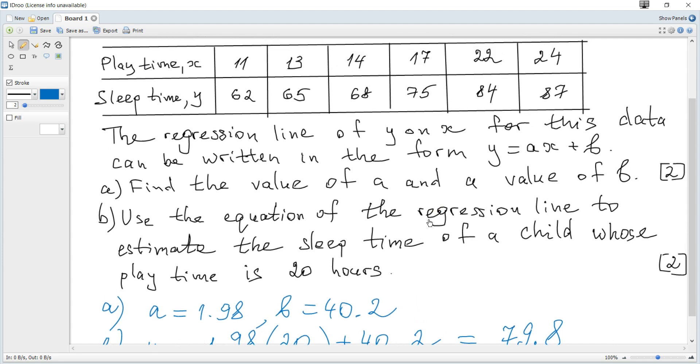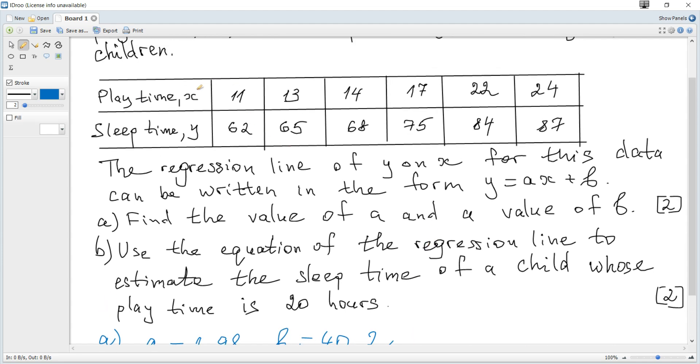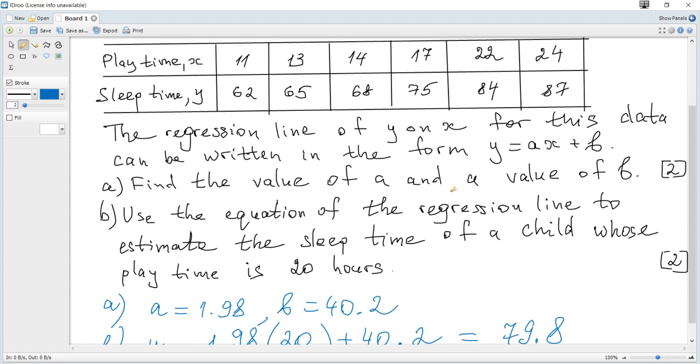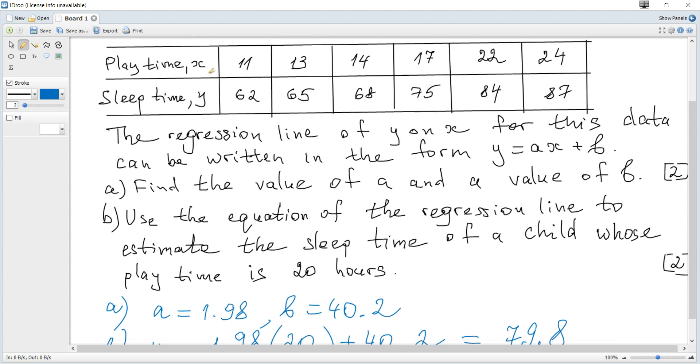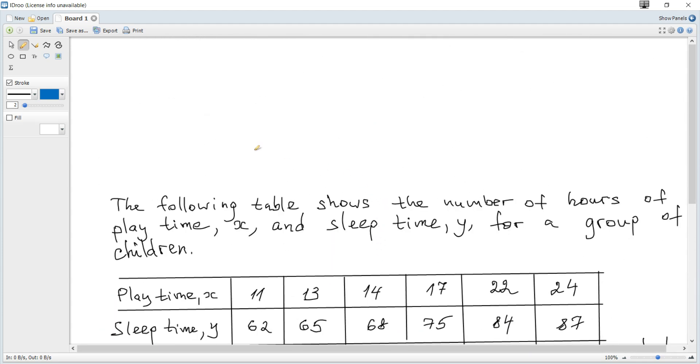Additionally, if it would be a question to estimate x for y is, for example, 70. First of all, 70 is from a given region. So we should do that. We can do that. It's reasonable. And to estimate x, here x and y are just names. We need x on y line and equation. So it becomes x is some cy plus d.